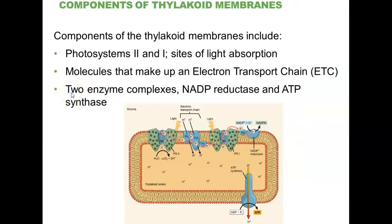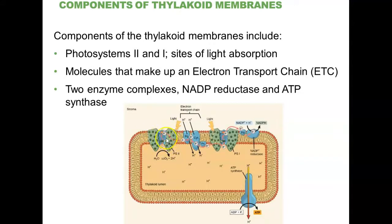That animation summarized the steps in the light reactions — the first half of photosynthesis. The key components are a collection of proteins mounted in the membrane containing photo pigments, particularly chlorophyll. This is Photosystem II, named that way because it was discovered second. We have an electron transport chain that includes proton pumps, very similar to the cellular respiration electron transport chain — different specifics, same idea, same function.